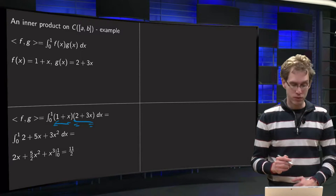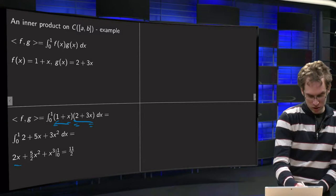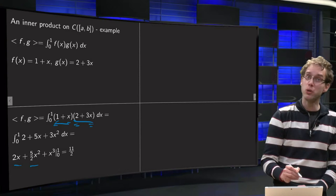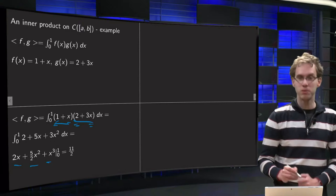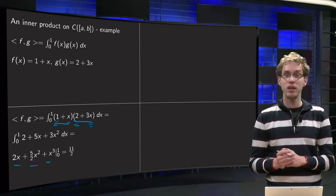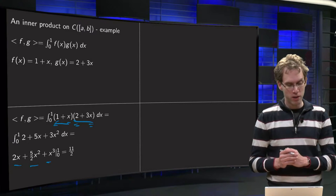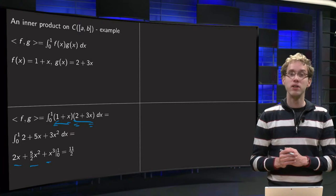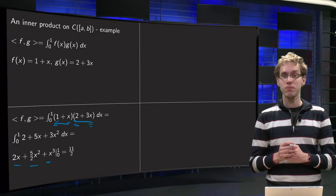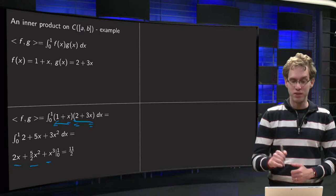And then we have to compute the antiderivative. 2x, 5x becomes 5x squared over 2, and 3x squared becomes x cubed, evaluated between 0 and 1. Lower boundary equals 0, and upper boundary 2 plus 5 over 2 plus 1, so 3 plus 5 over 2 equals 11 over 2. So there we have our inner product between f and g.